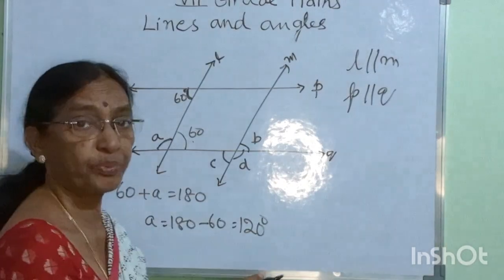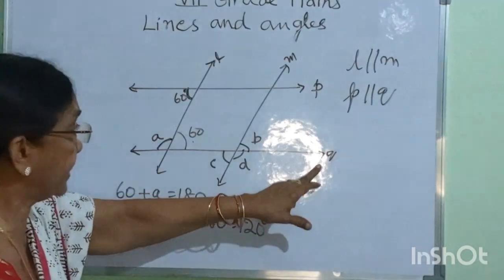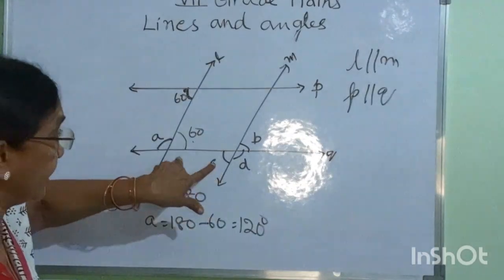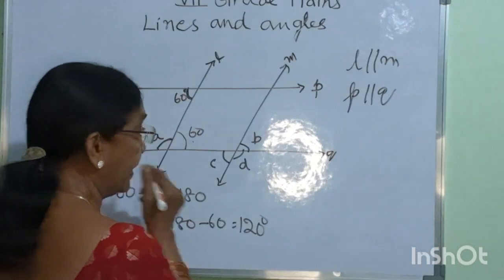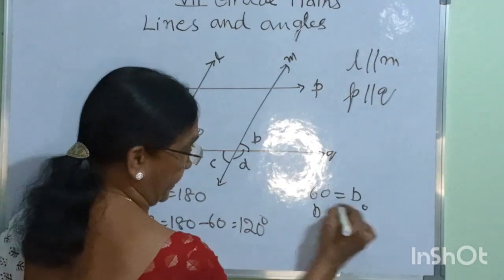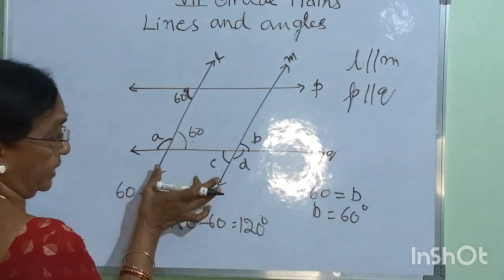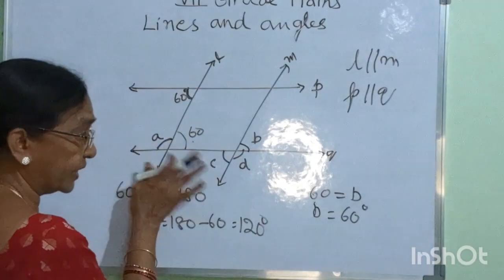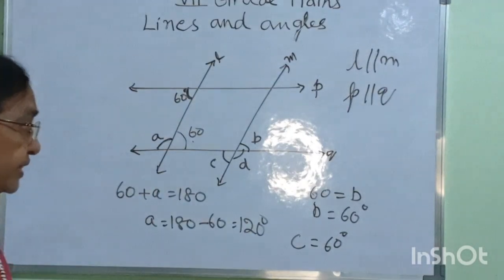60 and V are corresponding angles because they are lying on one side of the transversal. Let Q be the transversal for the parallel lines L and M. Therefore, 60 and V are lying on the same corresponding side, so corresponding angles are equal. Therefore, V is equal to 60 degrees. Also, 60 and C are alternate interior angles for the two parallel lines L and M with Q as transversal. Therefore, C is equal to 60 degrees.